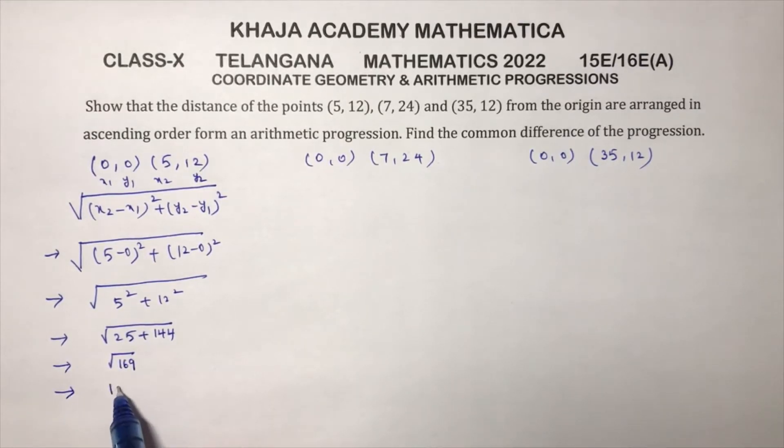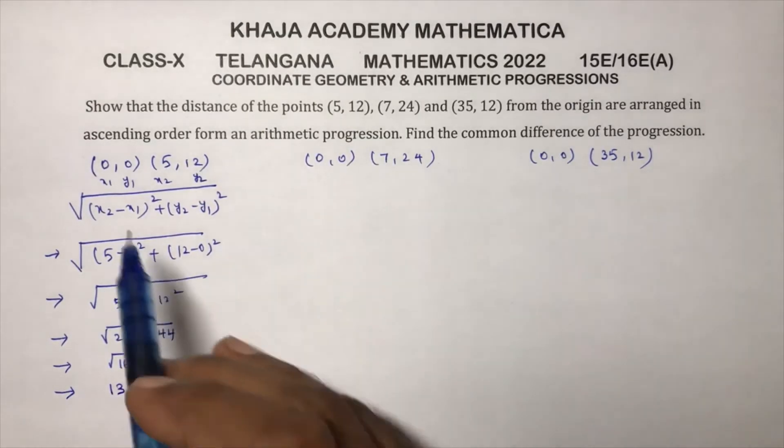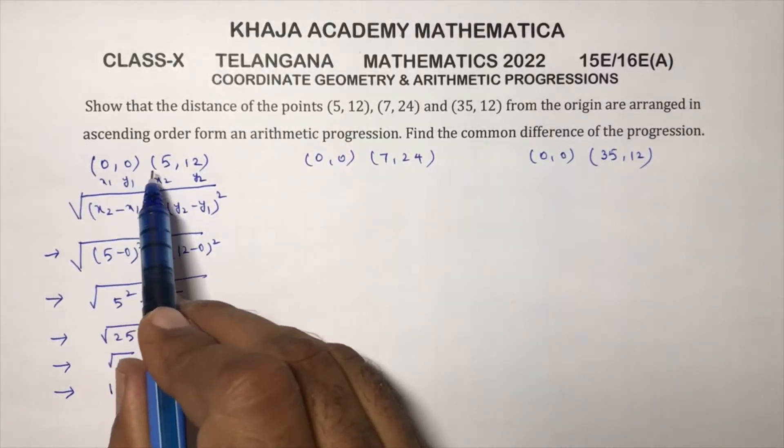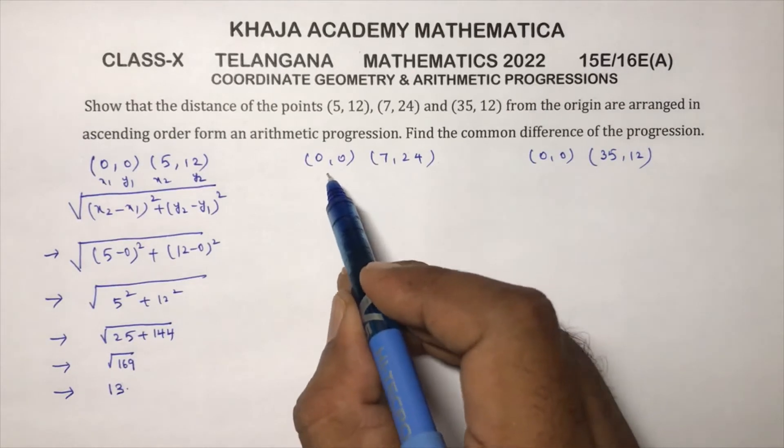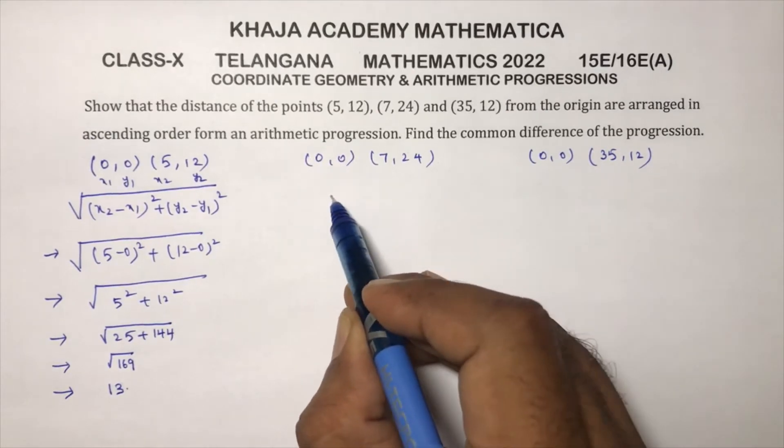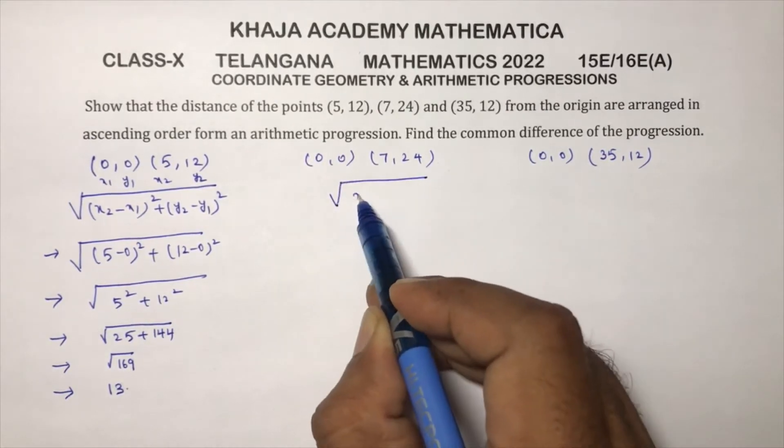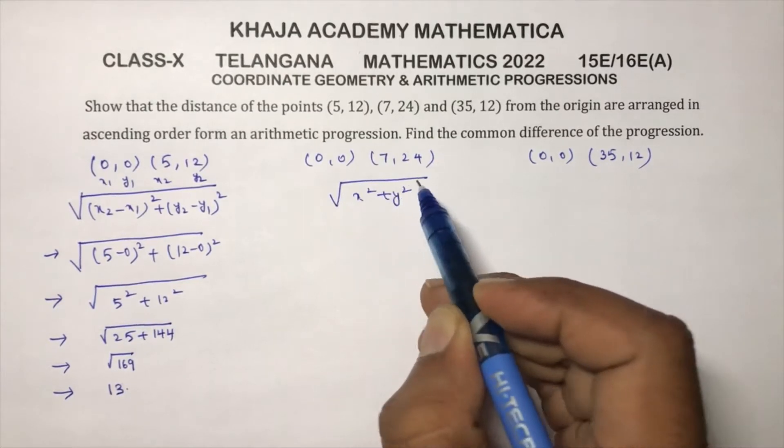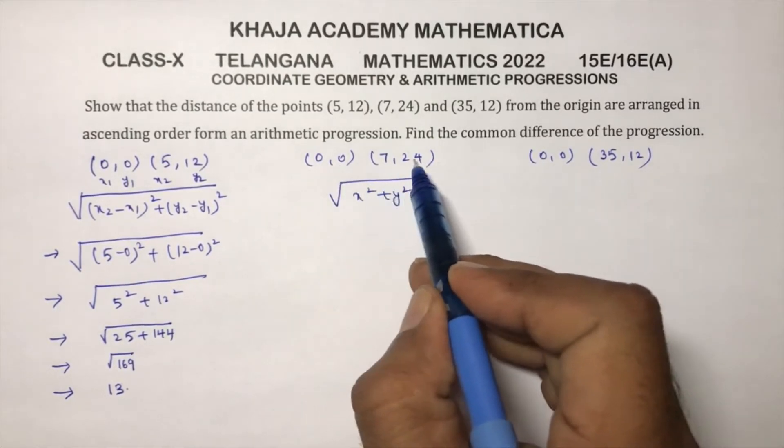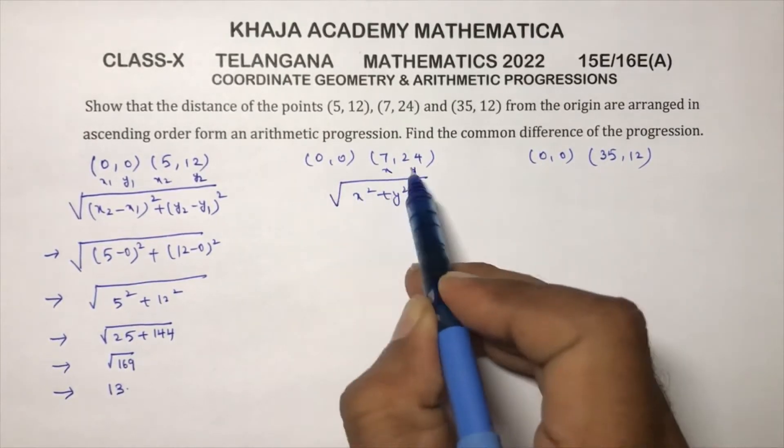So it is 169, root 169 is nothing but 13. Now see here, if the distance from the origin, direct formula also you can use, that is if one point is origin, the direct formula is under root x square plus y square. X and y values are only these two if you are calculating the distance between origin.